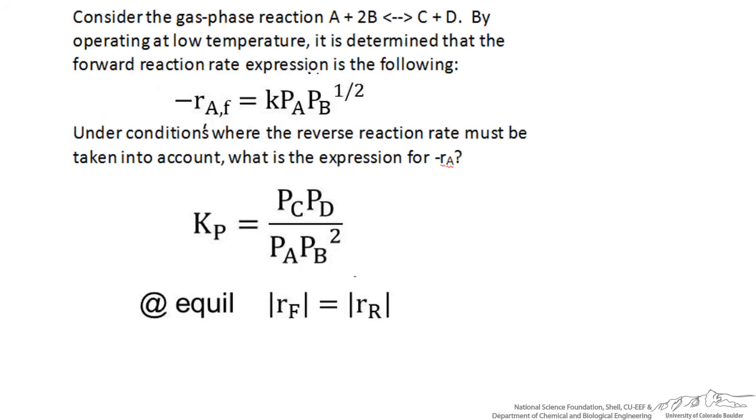Now we already have an expression for the rate of the forward process, and that's equal to k times PA times PB to the one half power. Now we just have to realize that at equilibrium we can substitute in from this expression, and that might be useful to us.